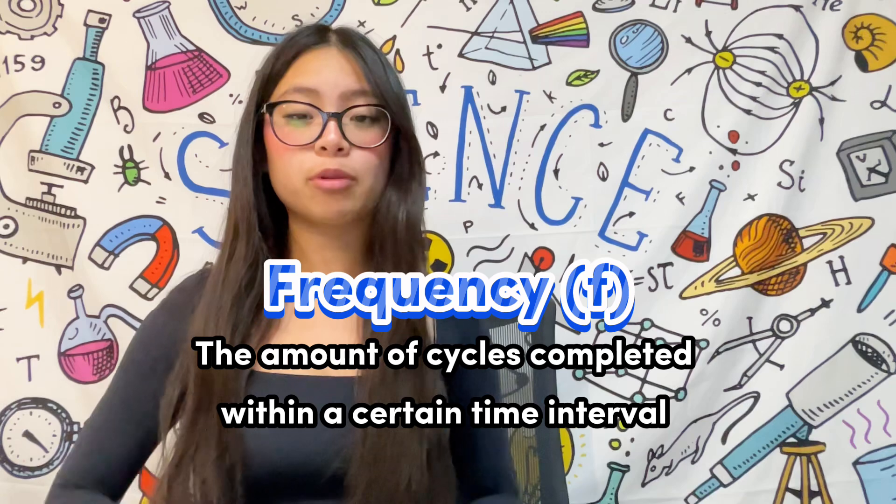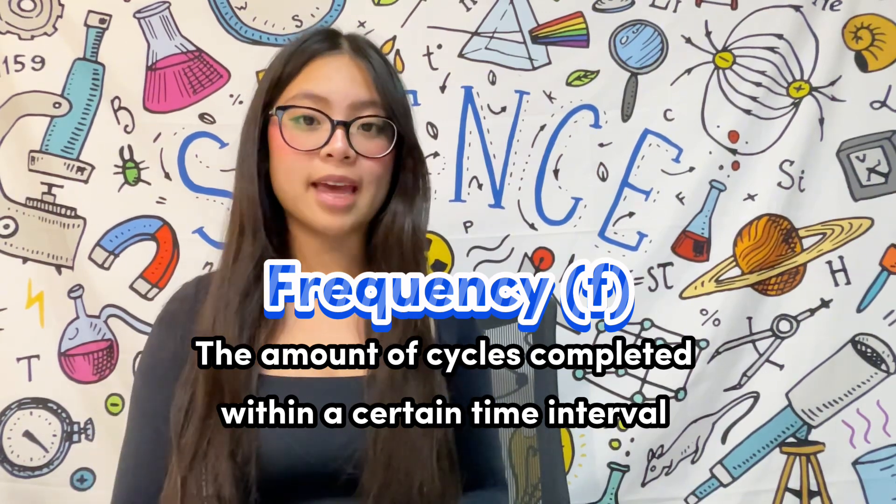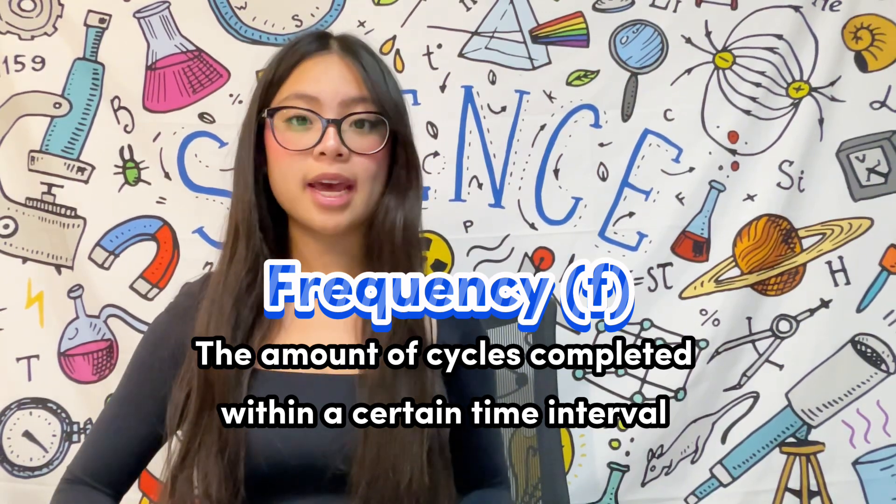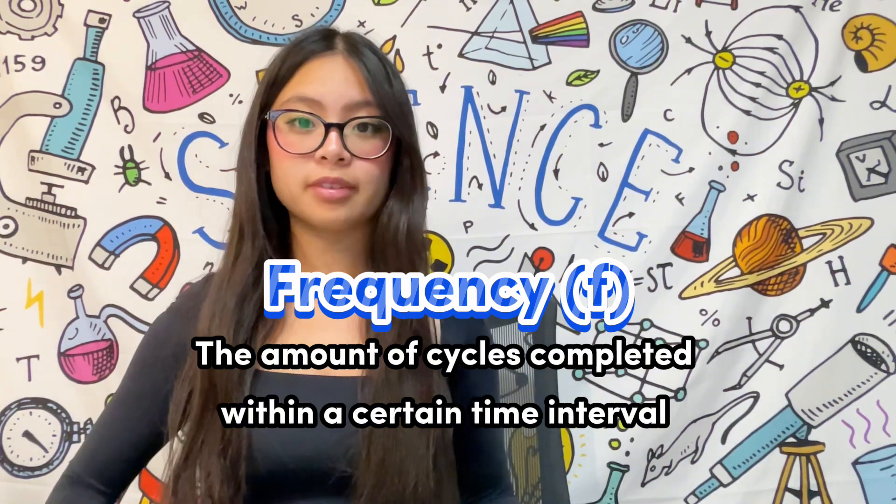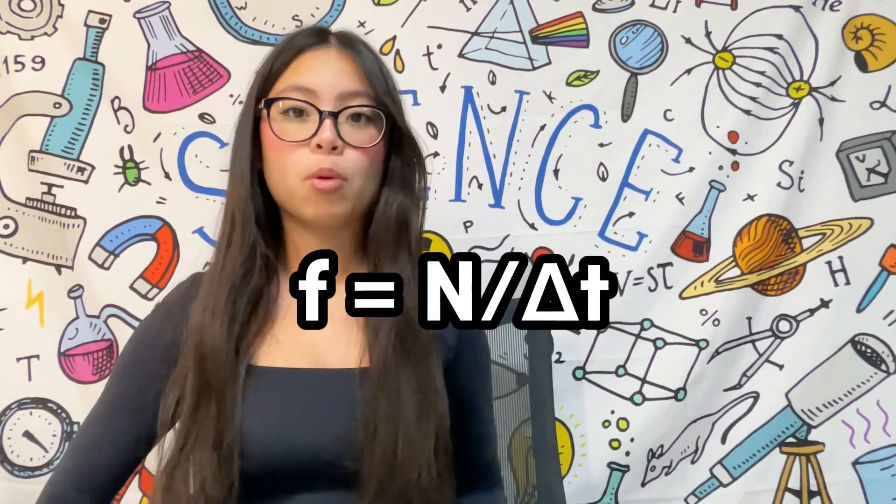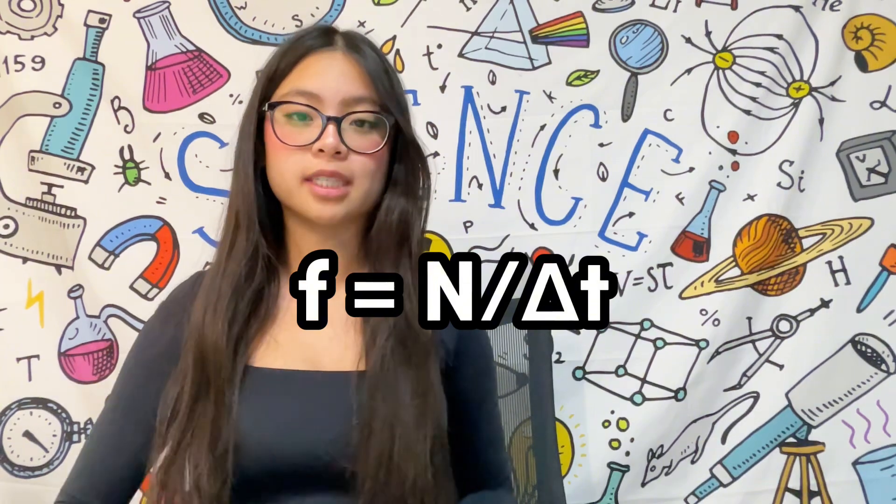Frequency refers to the number of cycles or wavelengths that pass a certain point in a certain amount of time. It is represented by the letter F. Since frequency is the number of cycles completed in a certain amount of time, it can be represented by the following equation where F equals N over delta T.